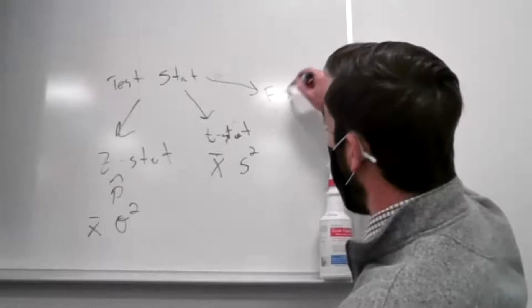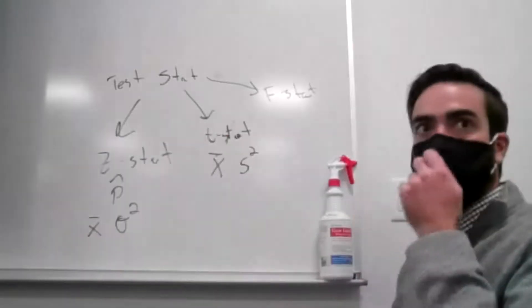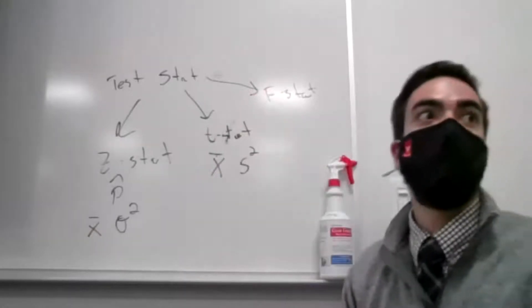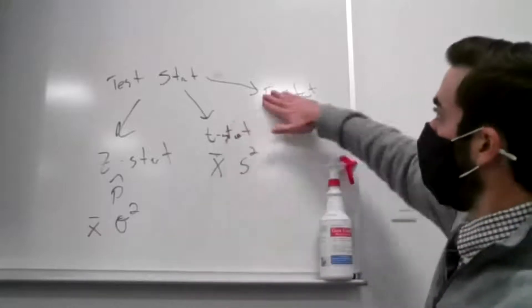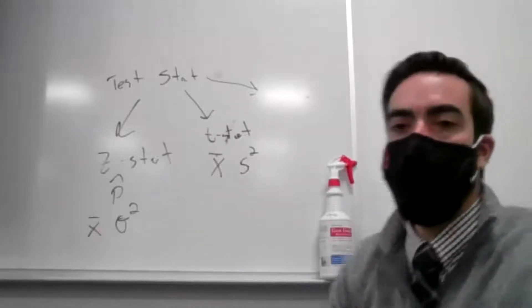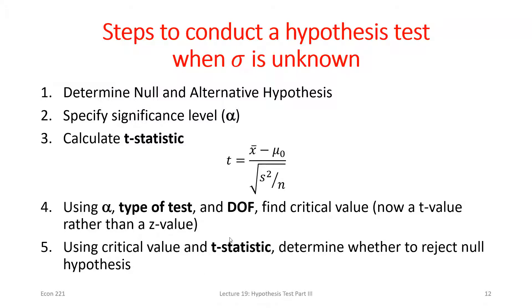If you took more stats courses, there are other things involving an F-statistic, which still a test statistic but comes from an F-distribution — but we won't use that in this class. When we find critical values using the t-distribution, we need to know our degrees of freedom, because every degree of freedom is essentially a different Student t-distribution. As degrees of freedom get higher, the Student t-distribution gets closer and closer to the standard normal distribution.